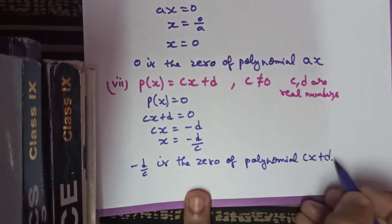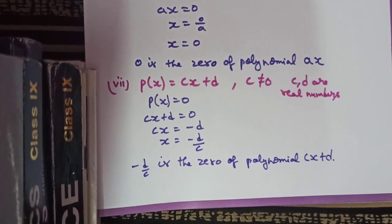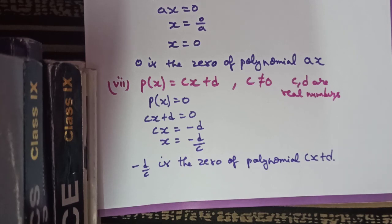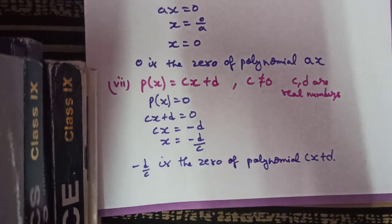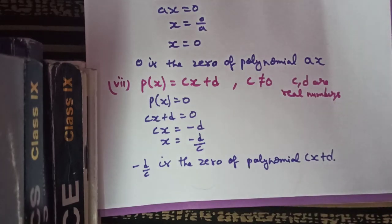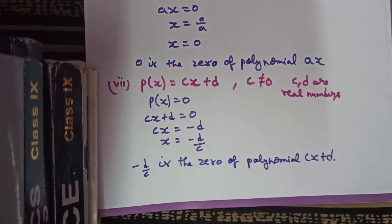The concept should now be clear. You can practice more questions based on this. For a linear polynomial we have only one zero, for a quadratic polynomial we have two zeros, and so on. Thank you so much class. Next class we will be introducing the remainder theorem.